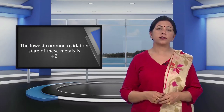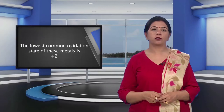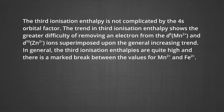The value for zinc is correspondingly low, as the ionization involves removal of an electron allowing production of the stable D10 configuration. The third ionization enthalpy is not complicated by the 4S orbital factor. The trend in the third ionization enthalpy shows the greater difficulty of removing an electron from D5 (Mn2+) and D10 (Zn2+) ions, superimposed upon the general increasing trend.